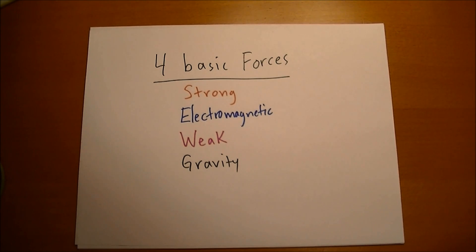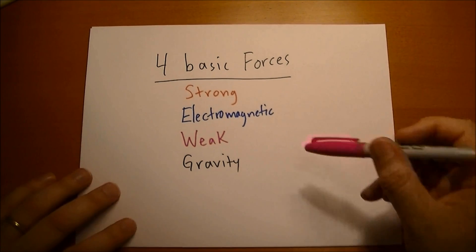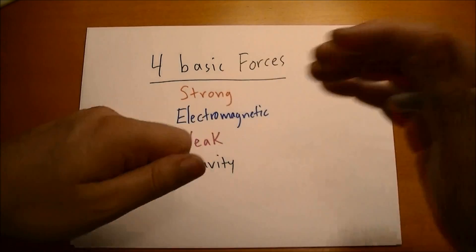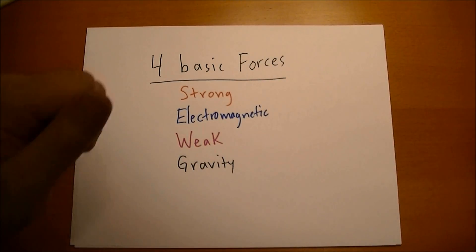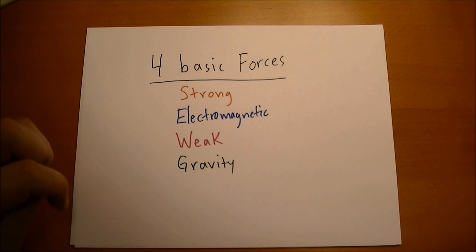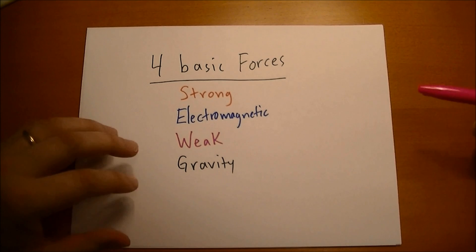An interesting history of physics is that at first we knew about the electric force. We'd rub wool on amber rods and we'd get charges and we could see that they would repel or attract. And we learned about Coulomb, the Coulomb force for electrical attraction or repulsion.